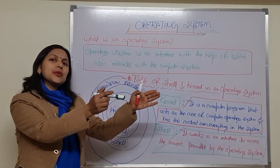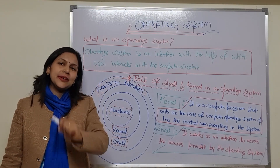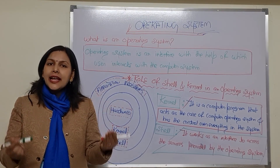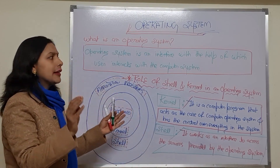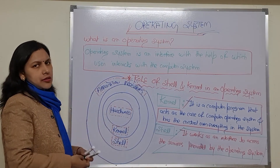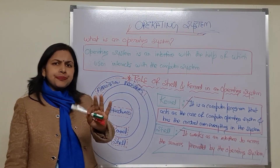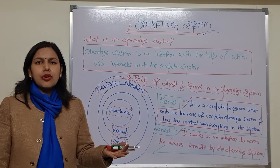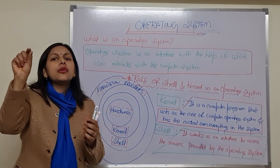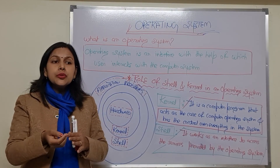So the operating system is that interface, that medium, with the help of which users can give commands to the computer system and assign tasks to it. On top of the system software layer, we have the layer of application software through which users give instructions to the computer system.